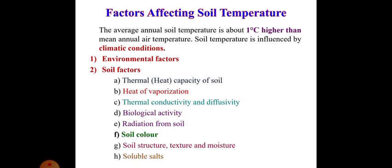There are some factors affecting soil temperature. The average annual soil temperature is about 1 degree Celsius higher than mean annual air temperature. Soil temperature is influenced by climatic conditions and it is of two types: environmental factors and soil factors.